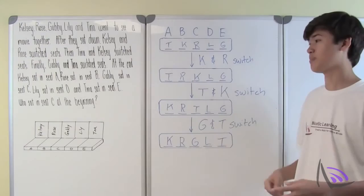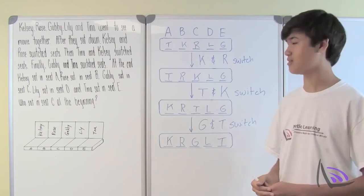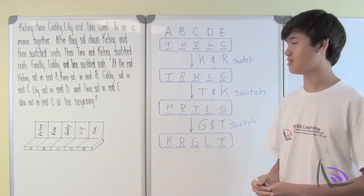We've filled out the whole flowchart. So let's go back to the question: who sat in seat C at the beginning? Looking at our first seating arrangement, seat C was Rose. So that's your answer — Rose sat in seat C at the beginning of the movie. Let's recap: first, use a flowchart to illustrate the problem; and second, work backwards step by step to solve the problem.